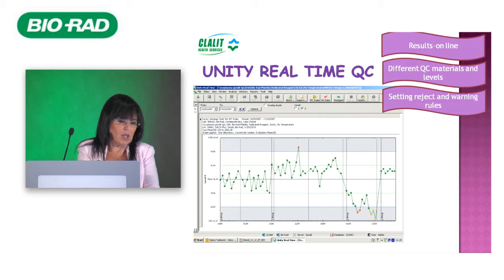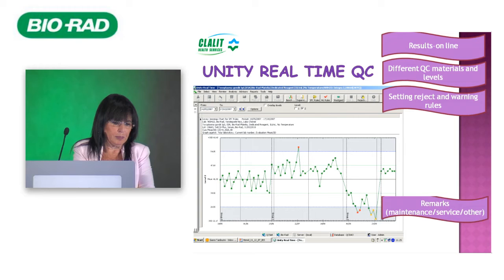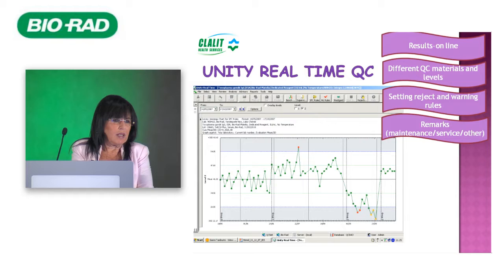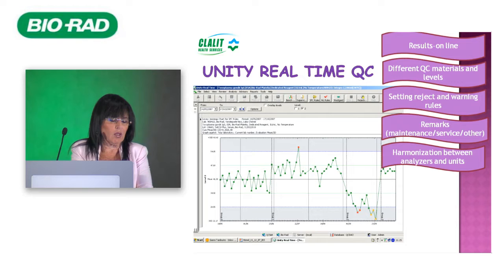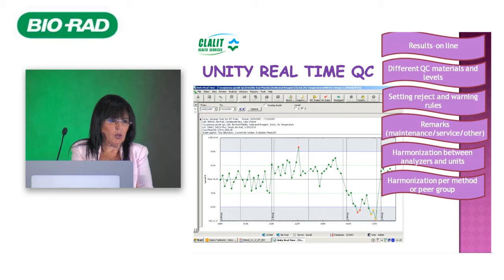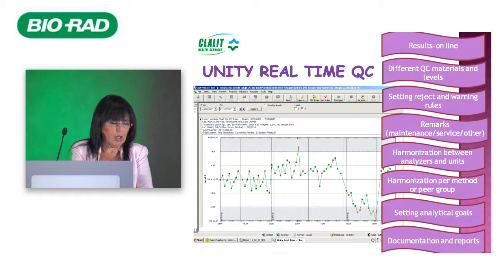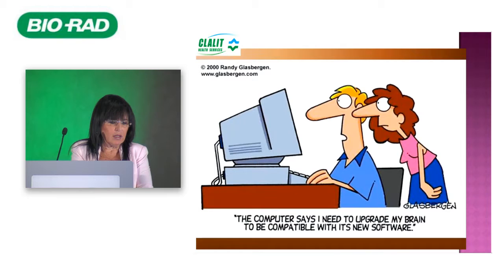We can set reject and warning rules depending on the analyte, since not all analytes are the same. We can include maintenance marks and service events in the charts. Harmonization is very important in serology and immunology — between units of the same instrument or between analyzers — because with such a high test volume, we must have several units from the same brand. We can set our analytical goals per test, and all documentation and reports are readily available.